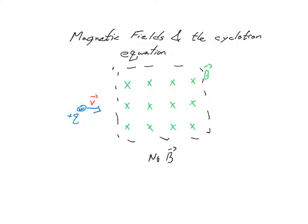My blue particle is just moving along, going to the right. Once it enters the magnetic field, there'll be a force on it. Let's use the right-hand rule to determine the direction of the force when the particle first enters. So here's my right hand — fingers pointing in the direction of the velocity, so my fingers are pointing to the right. I can rotate my wrist any way I want as long as my fingers are still pointing to the right. Now I'm going to rotate my wrist so that my right fingers curl in the direction of the magnetic field, which means my fingers curl down into the page, and that leaves me with a thumbs up. So the direction of the magnetic force on the particle right here is upwards.